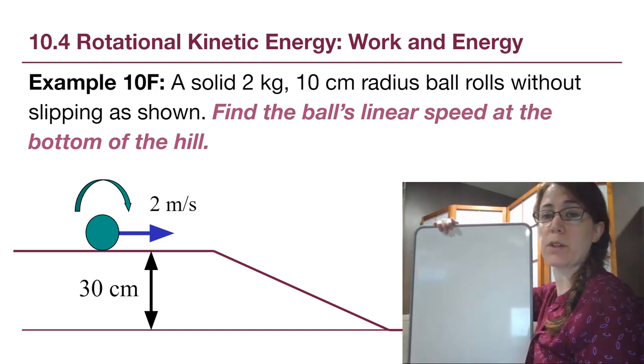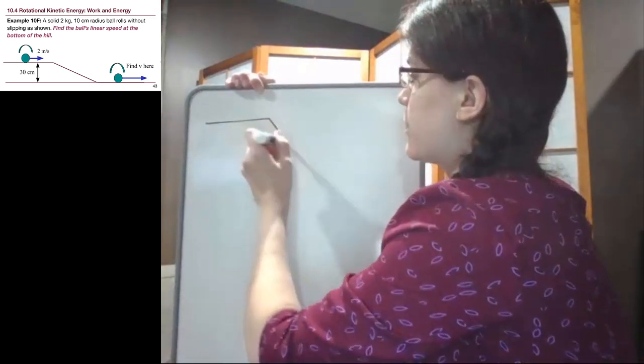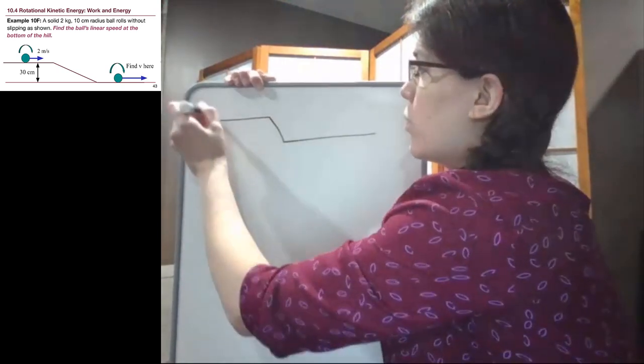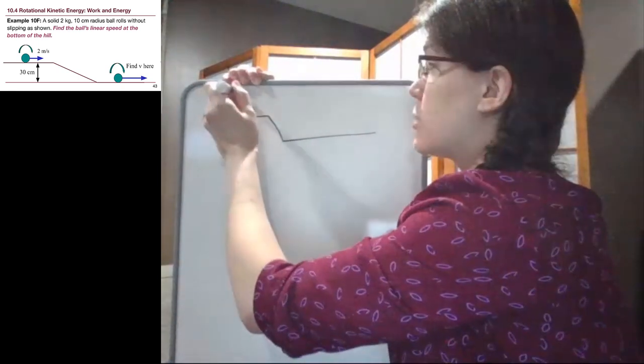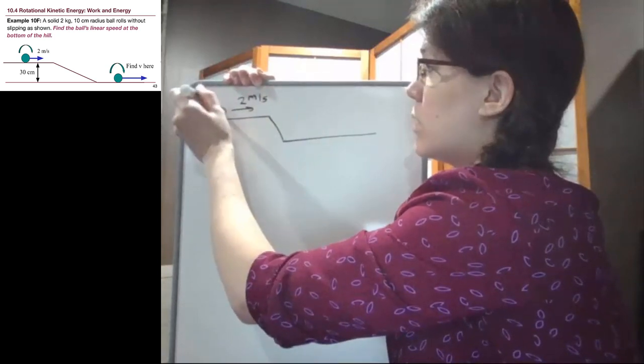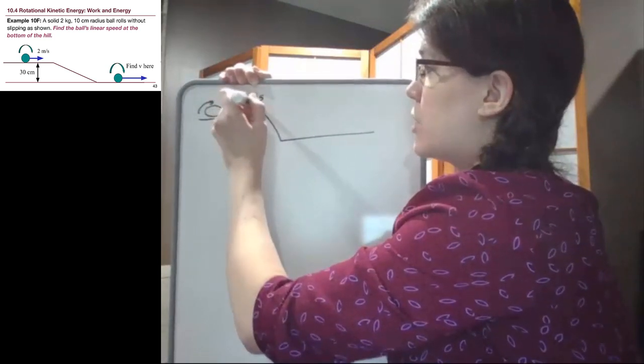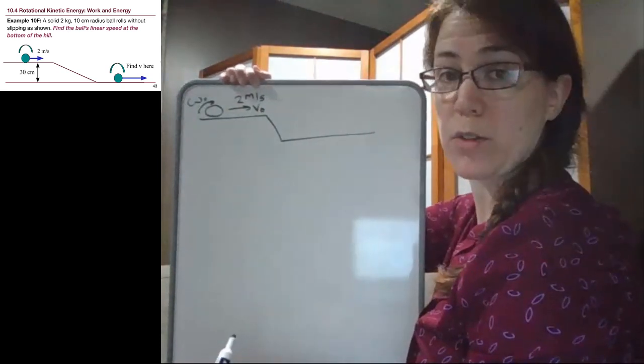So in this example, we have a ball that's going to roll down a hill. We can draw the picture where we have the ball moving with a speed of 2 meters per second at the beginning. And it's not just moving, it is rolling.